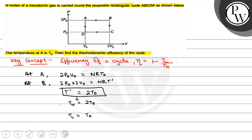So efficiency of the cycle η will be equal to 1 minus T₀ upon 2T₀, which will be equal to 1 minus 1 by 2, that is 0.5, which is equal to 50%.